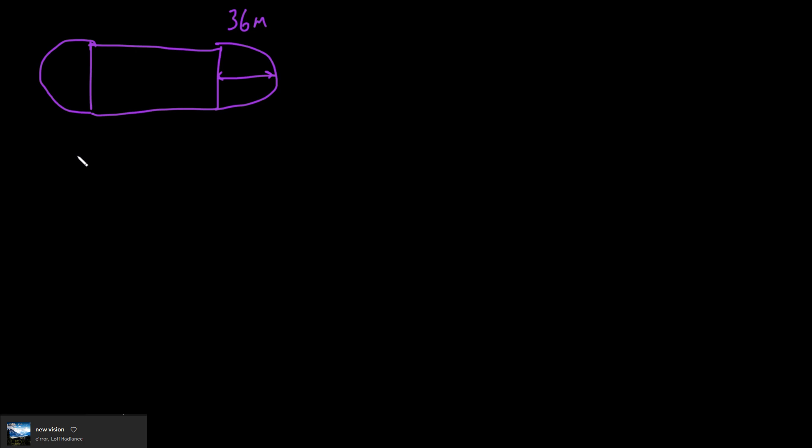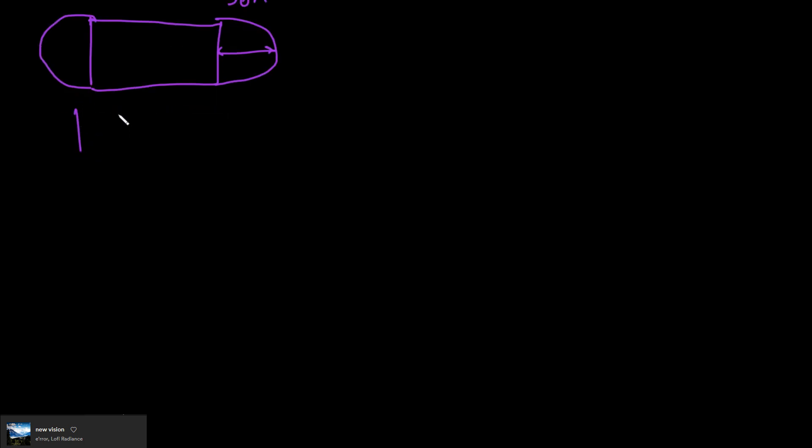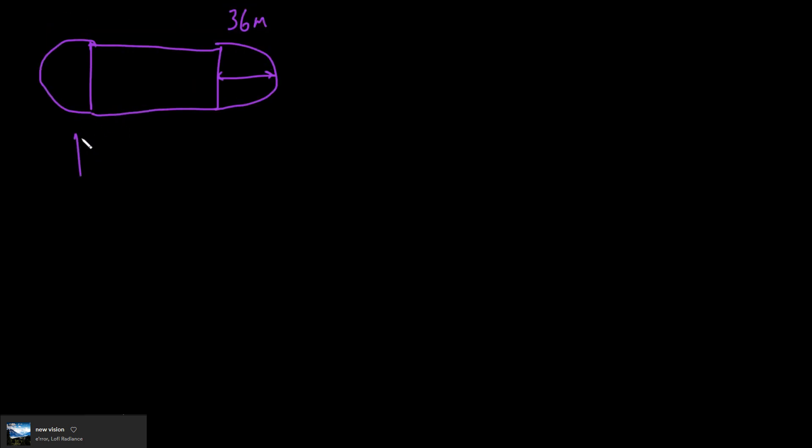Question 12 says a school has a track made up of a rectangle with two semicircles at each end, as pictured. The perimeter of the track is 395 meters. This distance here is 36 meters. The rectangular part of the track will be covered with grass, and each piece of grass has an area of 1.35 meters squared.